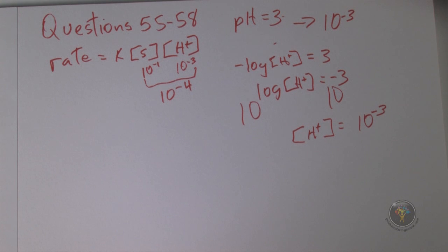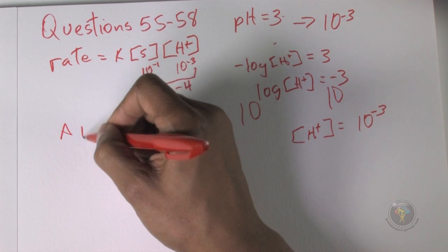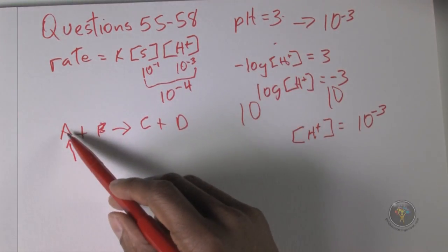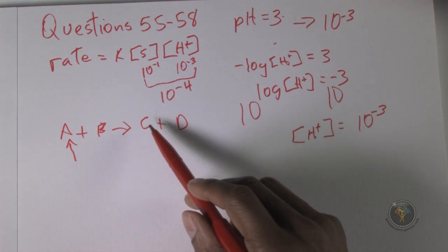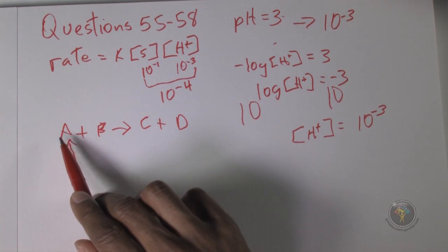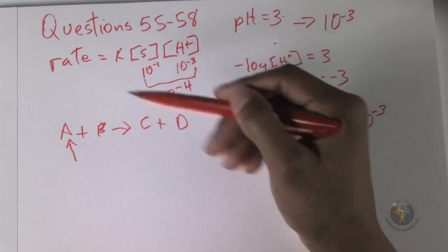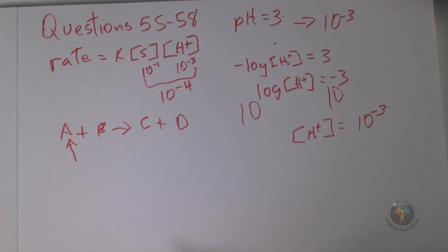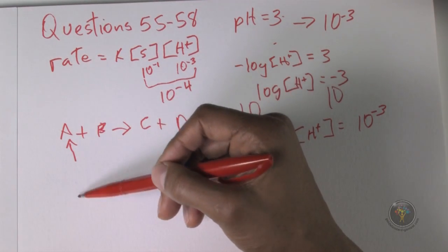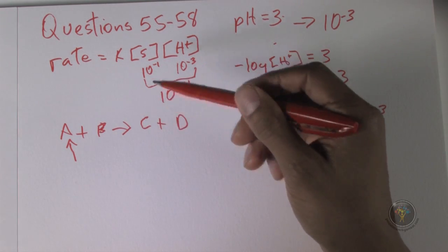Question 56: As the hydrolysis of sucrose progresses, the rate of change of the concentration of glucose will be equal to - if you have A plus B going to C plus D, the rate of decrease of A will equal the rate of increase of C, and the reason is we have a stoichiometry of one to one. As the reactants go away, these are being created at the same rate.